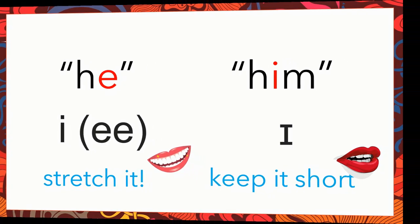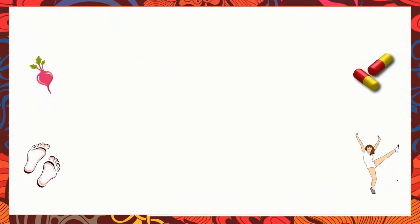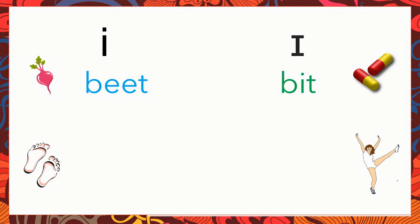Let's have some practice — starting with the easy ones. For the E sound, remember to smile and stretch it. And for the short I sound, your mouth is a little bit closed. Let's try. You have the word beat — beat. Bit. You see the difference? Beat. Bit. So you cannot say, oh, can I have a beat of ice cream? It doesn't sound right. So you have peel, pill. Peel, pill.